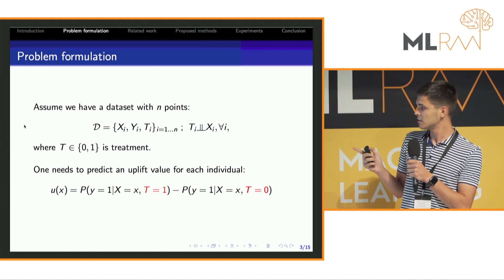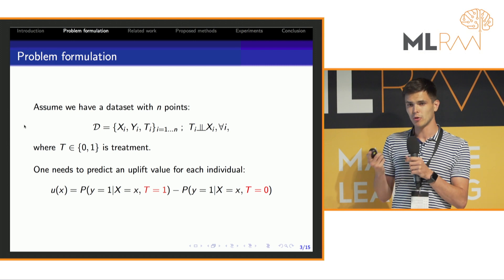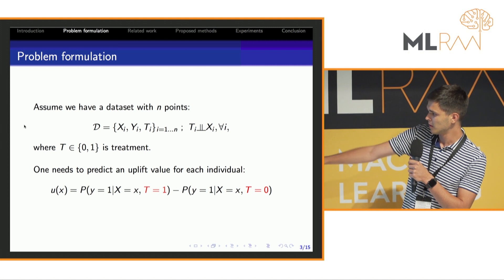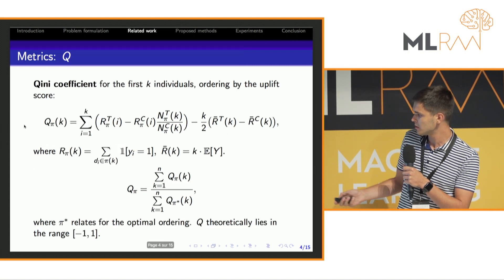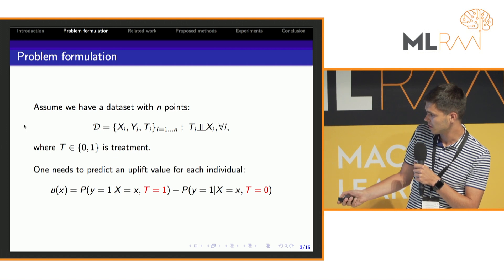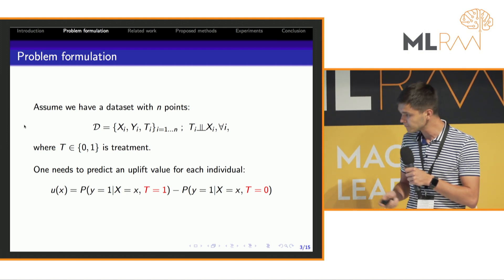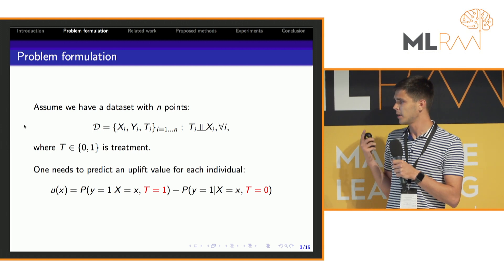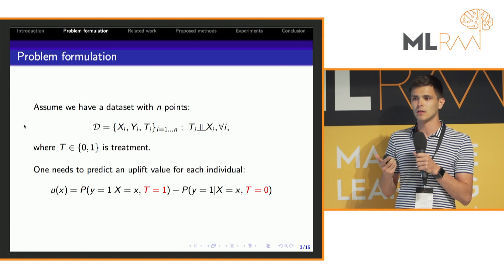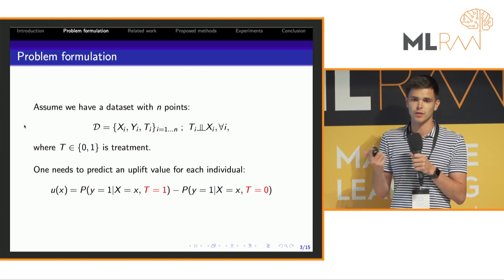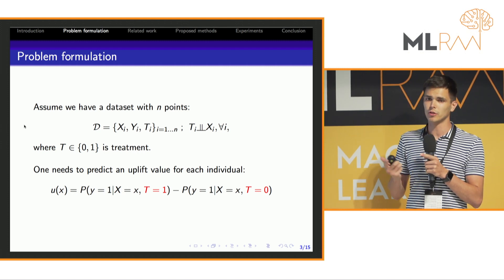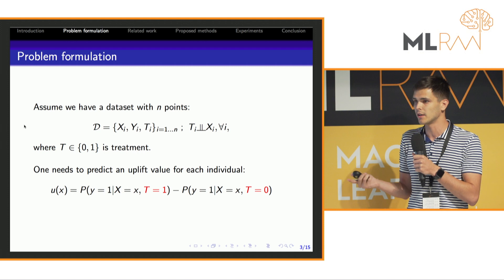Having such a dataset, our purpose is to predict the probability difference of two following probabilities, which is exactly an uplift. The main difficulty here is that we can always observe only one of the potential outcomes. For instance, the patient can't simultaneously take and not take medication.